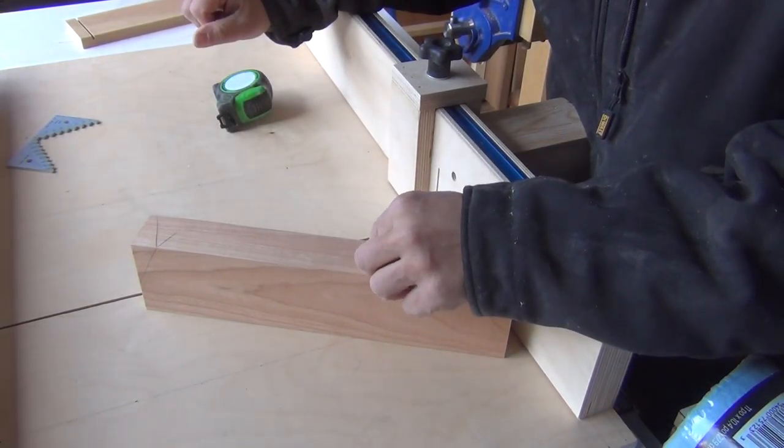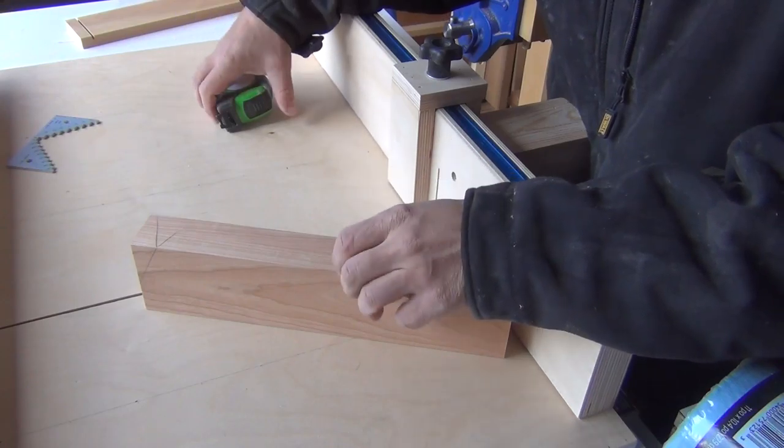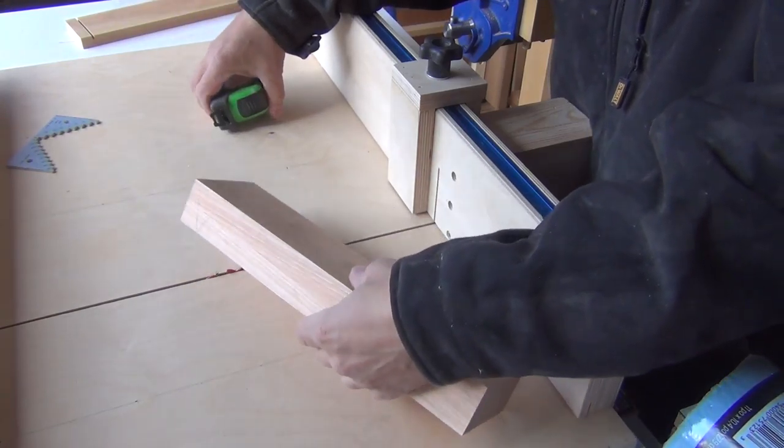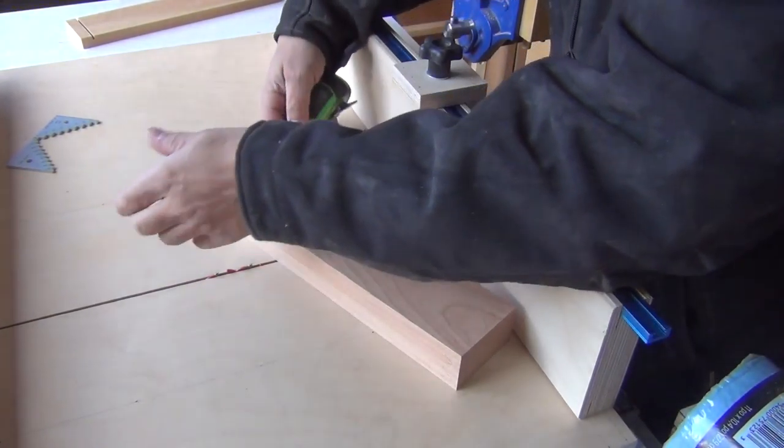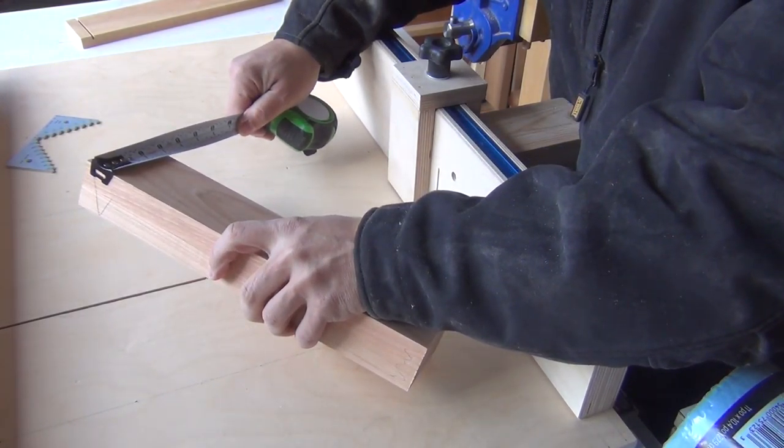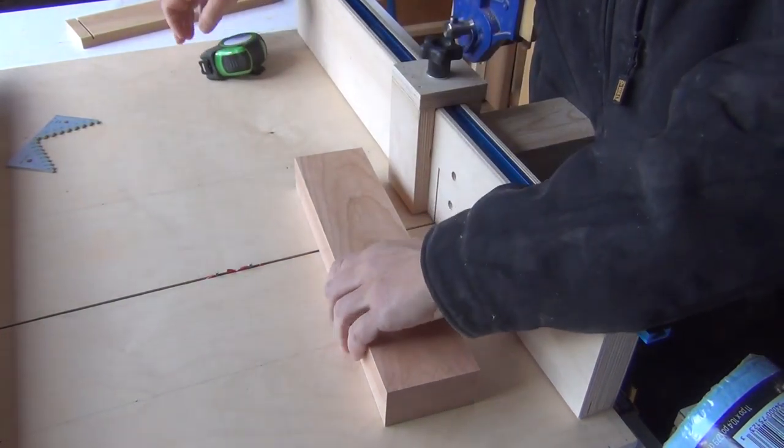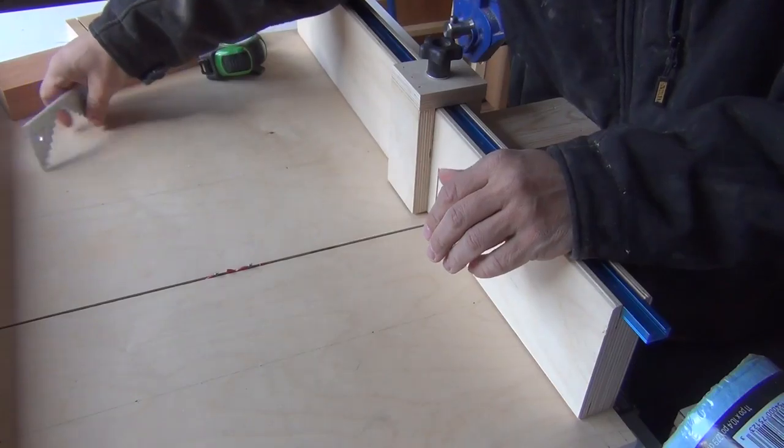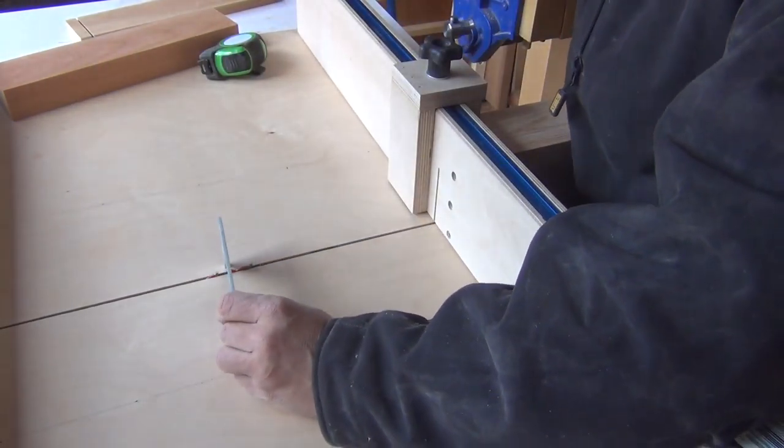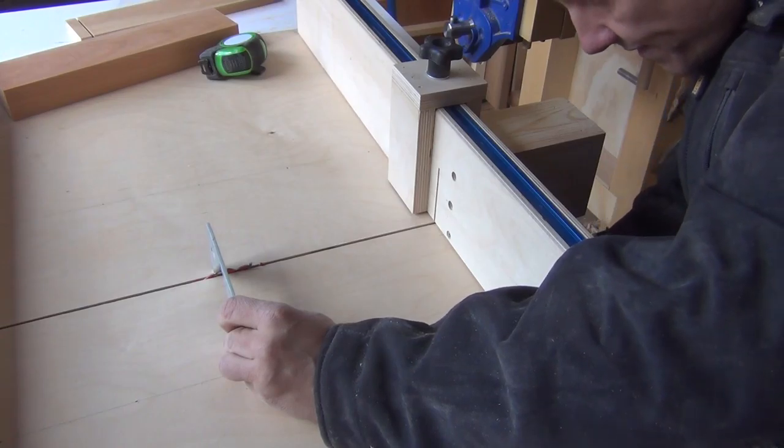So these pieces are a little over an inch and five eighths thick. So I'm going to aim to have the tenon just a little bit over half an inch thick, and three inches. So I'll take half an inch off the sides as well.